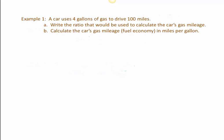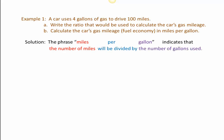So let's start off with an easy type of example. We have a car that uses four gallons of gas to drive 100 miles. We would like to find the ratio that's used to calculate the car's gas mileage. And a ratio is just a quantity that's being divided, and in this case the ratio is a rate because the units that are being divided are different. So for part A, we would take miles per gallon to say that what we want to do is divide the number of miles by the number of gallons. So we would have 100 miles divided by the 4 gallons.